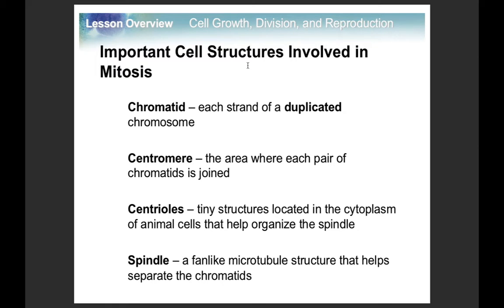Make sure you look carefully at cell structures because they can get confusing, especially centromere and centrioles — they are completely different and do completely different things. The chromatids together form the chromosome, and the centromere joins the two chromatids. The centrioles, which we glossed over when covering animal cells, help the spindle fibers form. Those spindles are what separate the chromatids.